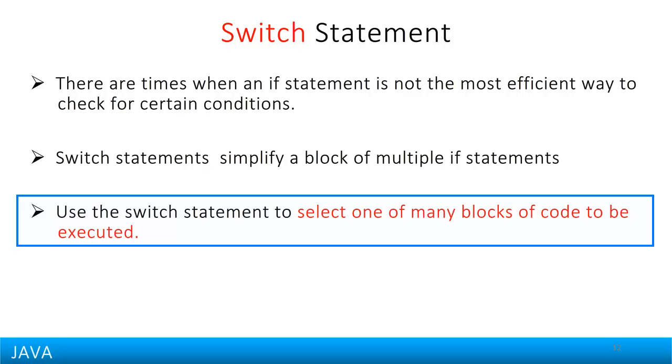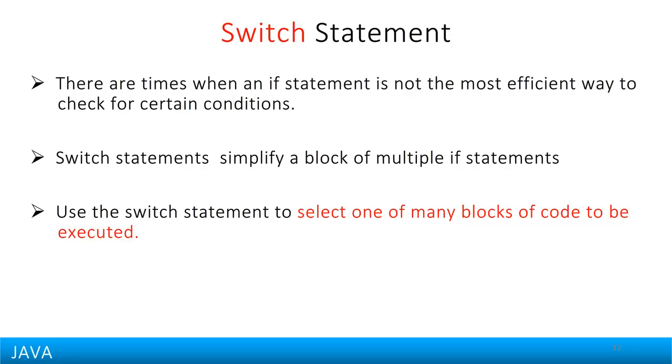A SWITCH block checks the value of a variable and based on that lets a specific piece of code be run. Let's see an example to make it clear.